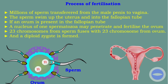Now the process of fertilization: fertilization is when a nucleus from a sperm cell fuses with a nucleus from the ovum or egg cell. Millions of sperm are transferred from the male penis to the vagina. The sperm swim up the uterus into the fallopian tube. If an ovum is present in the fallopian tube, the nucleus of one spermatozoon may penetrate and fertilize the ovum. Then 23 chromosomes from the sperm fuse with 23 chromosomes from the ovum, and a diploid zygote is formed.